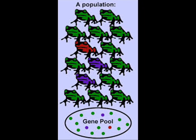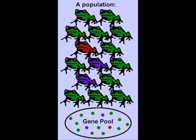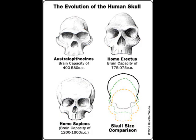Creationists will of course move the goalposts yet again and say that's just a small change in already existing information — and that's exactly the way evolution works. One mutation in a population may change the DNA difference between population groups by a fraction of 1%, but over time without interbreeding these mutations will add up, and their variations will rise over time until they have a high amount of difference from each other.